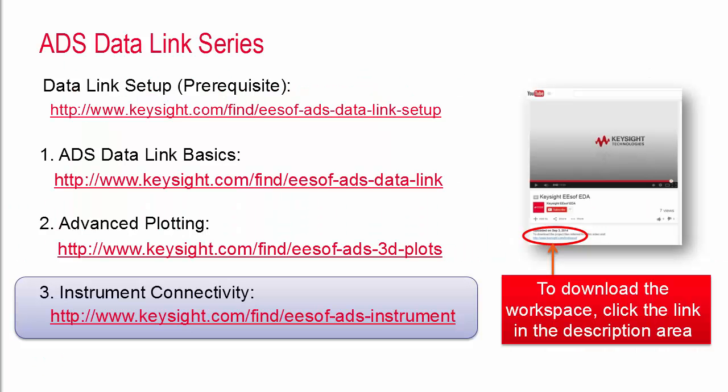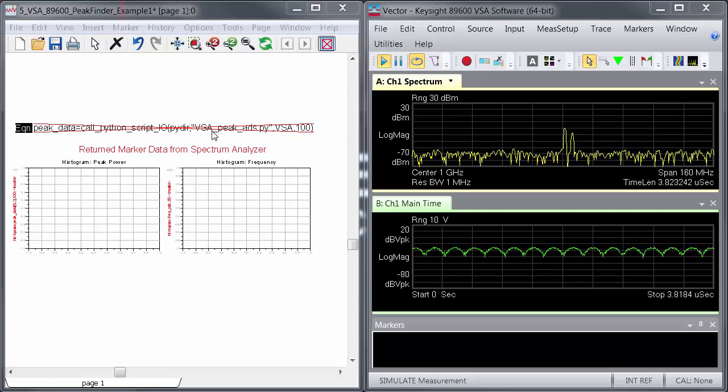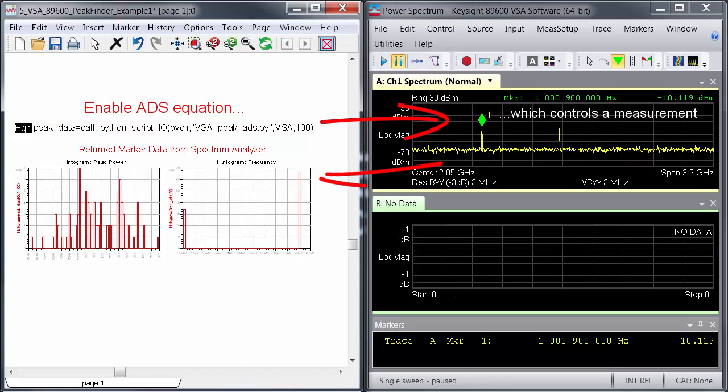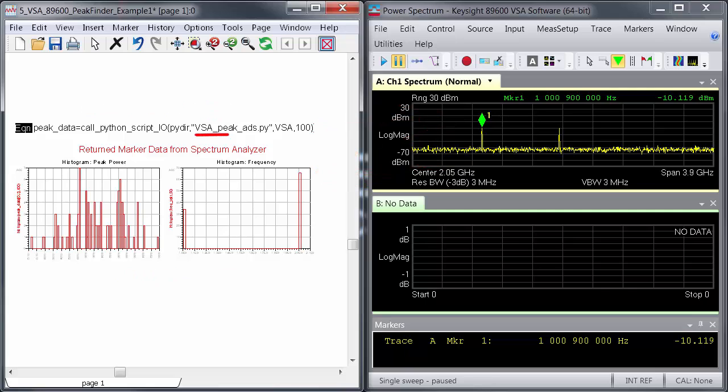This is the third video in a series about the ADS data link and you can find more information on the basics here. Using the data link I can create an ADS equation to control a measurement on a remote spectrum analyzer and return measured data back to ADS. The measurement is managed using a Python script invoked out of ADS through the data link.